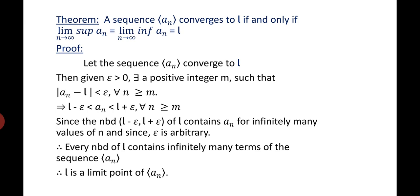Using the definition: given epsilon > 0, there exists a positive integer m such that |a_n - l| < epsilon for all n ≥ m. This implies l - epsilon < a_n < l + epsilon for all n ≥ m. Since the neighborhood (l - epsilon, l + epsilon) of l contains a_n for infinitely many values of n, and since epsilon is arbitrary, every neighborhood of l will contain infinitely many terms of the sequence a_n. Therefore, l is a limit point of a_n.